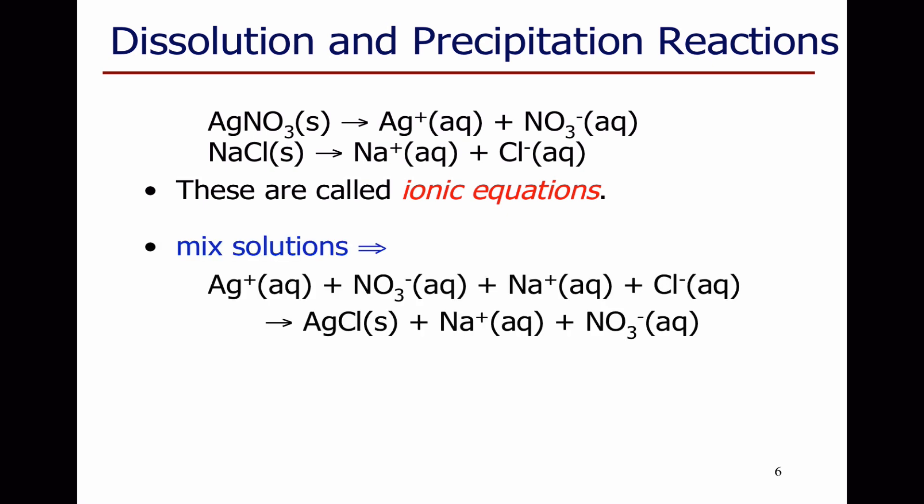If we mix these solutions, we're going to have a solution that contains silver ions, nitrate ions, sodium ions, and chloride ions. But we said before that silver ions and chloride ions will quickly precipitate, will quickly come out of solution as a solid.